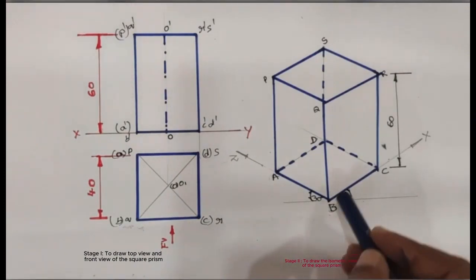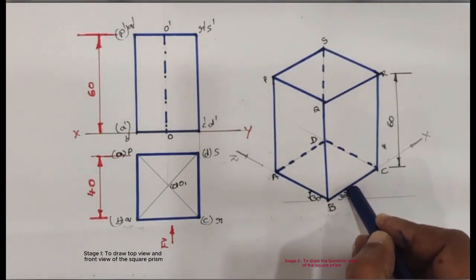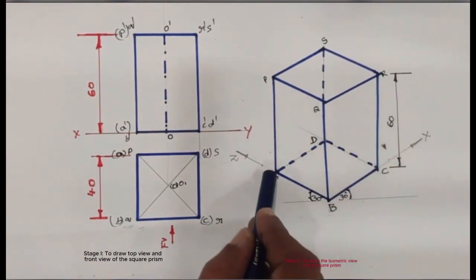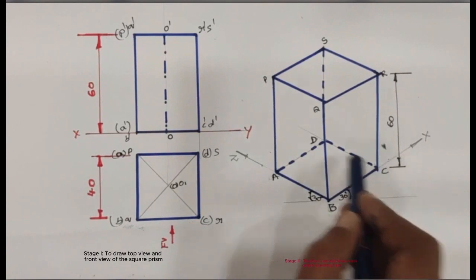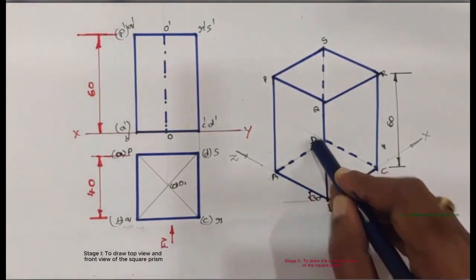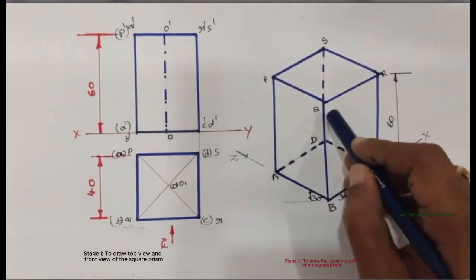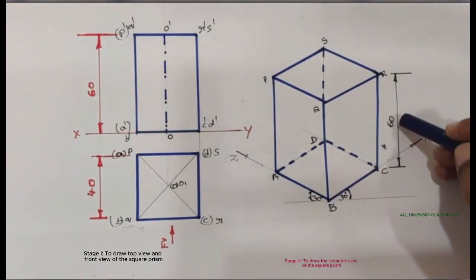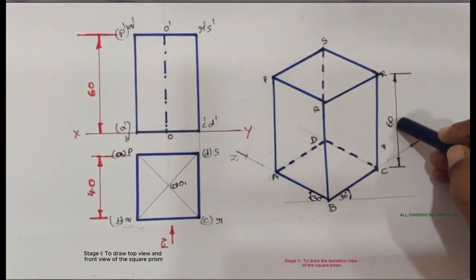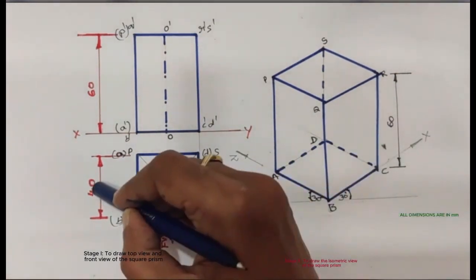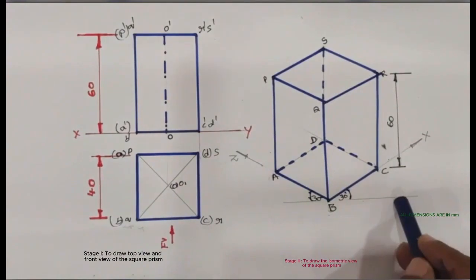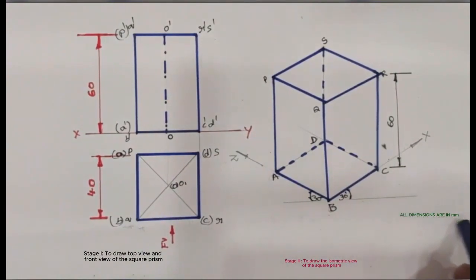This is the isometric view of the square prism when it is resting on its base on HP. Here, ABCD is the bottom base and PQRS is the top base. The prism's axis height is 60 mm and its base side length is 40 mm. All dimensions are in millimeters.